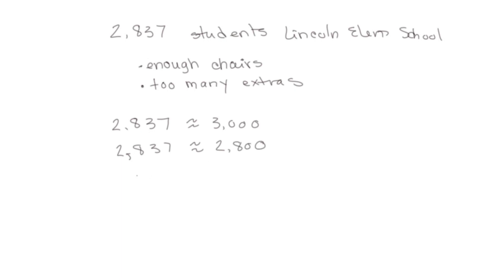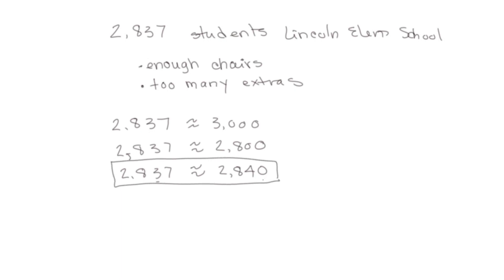Rounding to the hundreds still leaves 37 kids who wouldn't have a place to sit. Now if we round to the 10s place, the 2,000 and the 800 stay the same. Looking at the 10s place, 37 is closer to 40 than to 30, so we'd round to 40. With this estimate, we'd have enough chairs for everybody and only three extras.